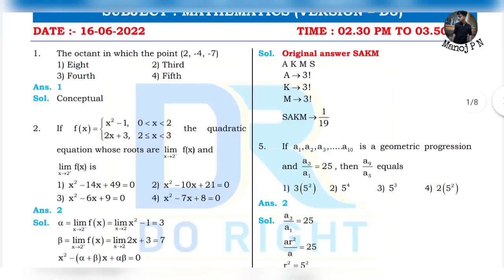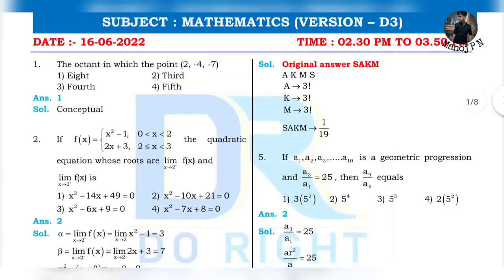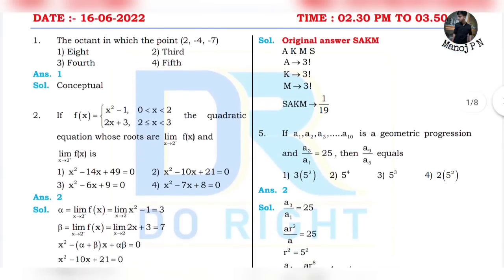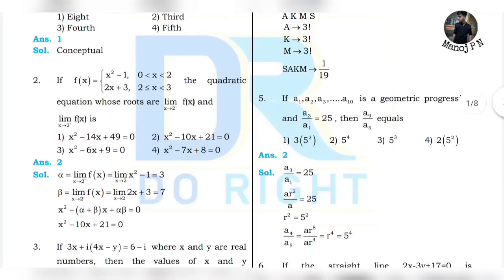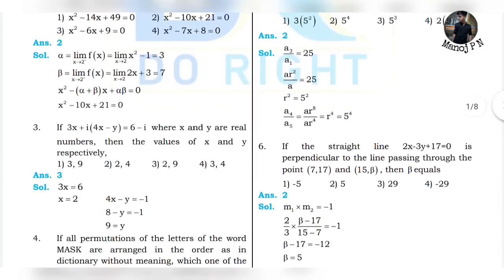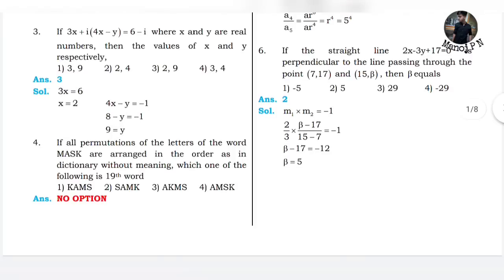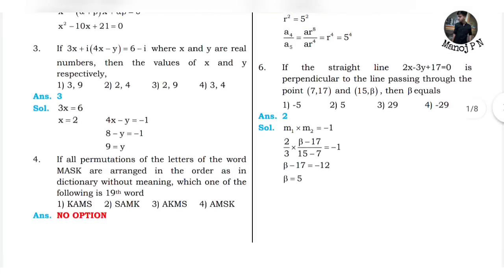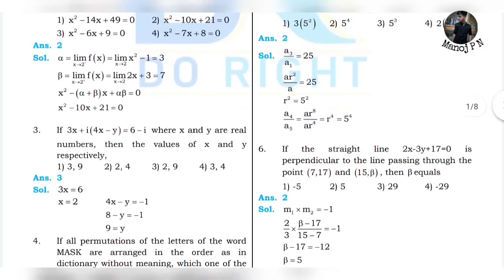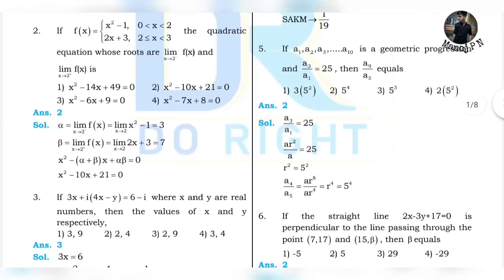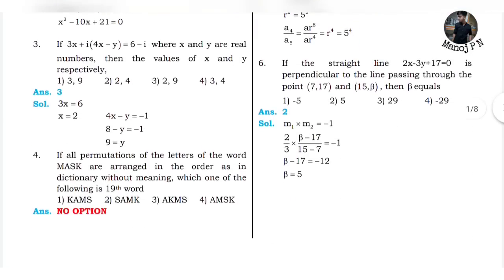Question number 1 is 1. This is version D3. Question number 1 is 8. Question number 2 is 2. Question number 3 is 3. Question number 4 is no option. Question number 5 is 2. And question number 6 is 2.